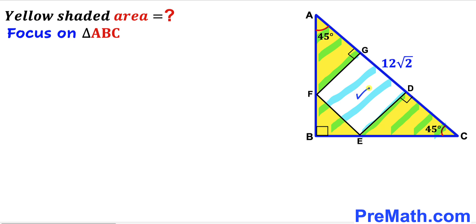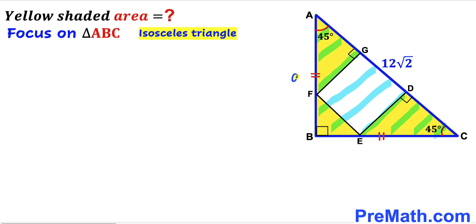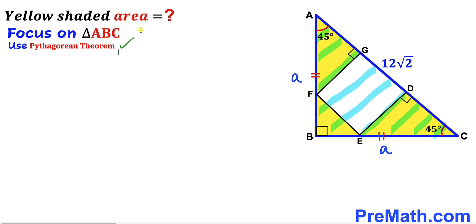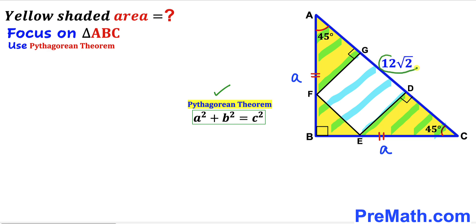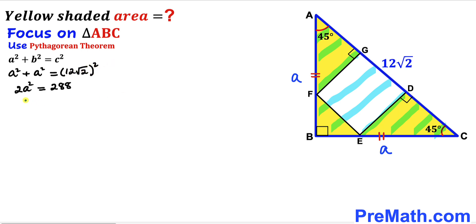Let's focus on the blue triangle ABC. We can see this triangle is an isosceles triangle since the two base angles are congruent. Therefore, side length AB equals side length BC — I'll label both as lowercase a. Applying the Pythagorean theorem: a² + b² = c². In our case, the hypotenuse is 12√2, and the two legs are both a, giving us a² + a² = (12√2)², which simplifies to 2a² = 288.